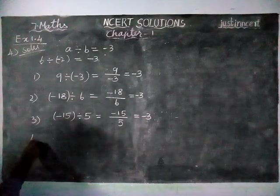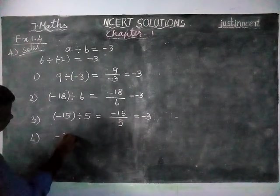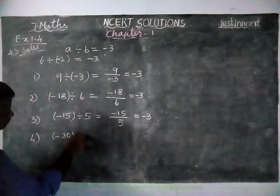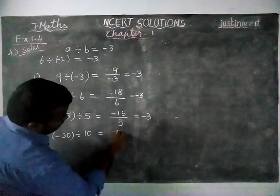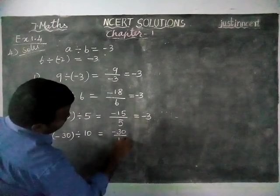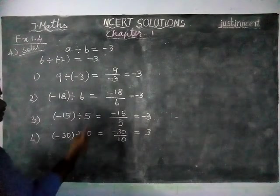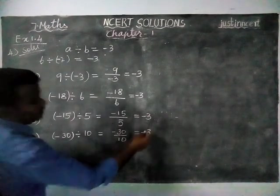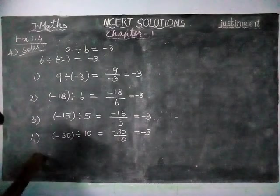Next, fourth pair, minus 30 divided by 10 is equal to minus 30 divided by 10. 3 tens are 30 and signs are different, so minus 3 is answer.